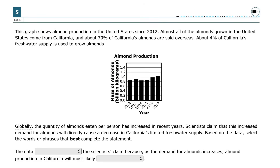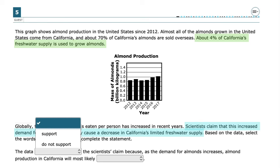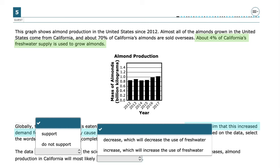Use the information in the passages along with the graph to see if the data support the claim that an increased demand for almonds will directly cause a decrease in California's limited freshwater supply. Since the passage states that 4% of California's freshwater supply is used to grow almonds, the data supports the scientists' claim because as the demand for almonds increases, almond production in California will most likely increase, which will increase the use of freshwater.